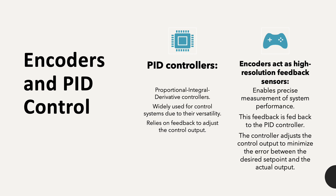In most mechanical systems we use encoders for feedback, as they provide precise motion state. For example, in robotic arms we use encoders to know the position of joints. In differential drive, we use encoders to get the velocity of each wheel, and many more applications.